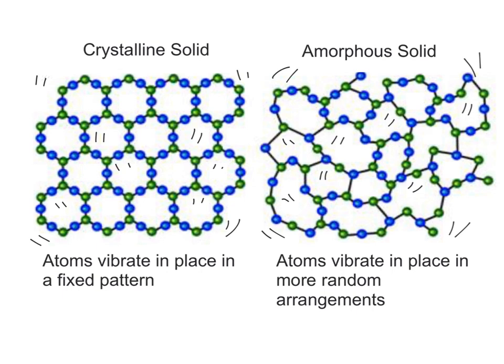In an amorphous solid, it looks sort of like it might be a crystal structure, but it's not perfect. It's sort of warped in places and some stuff is out of place. They're both solids so the particles are just vibrating in place, but amorphous solids have more of a liquidy structure where the particles are not as orderly.